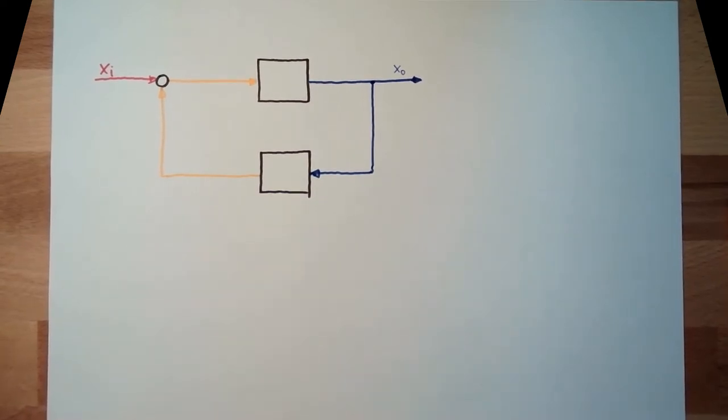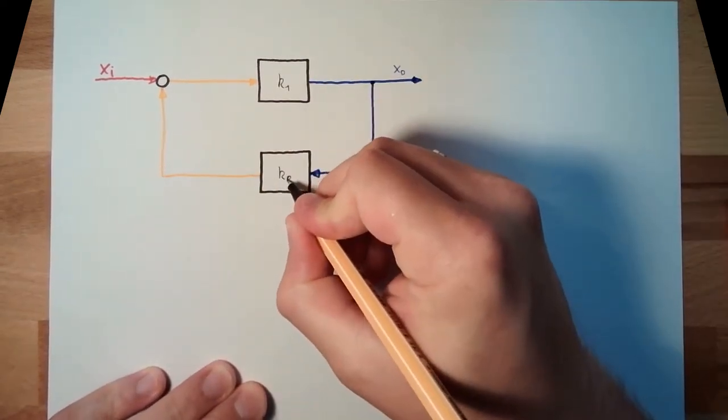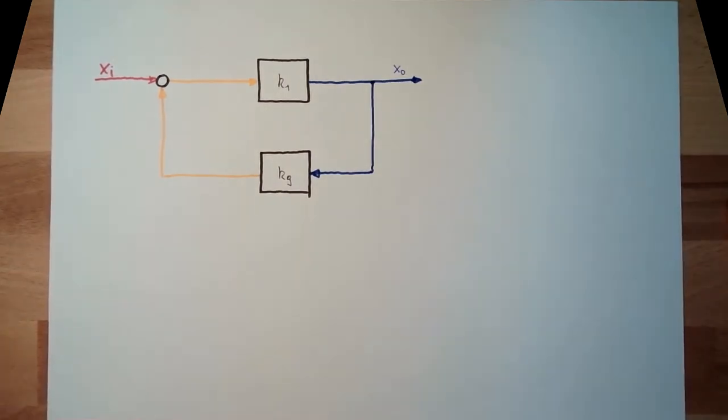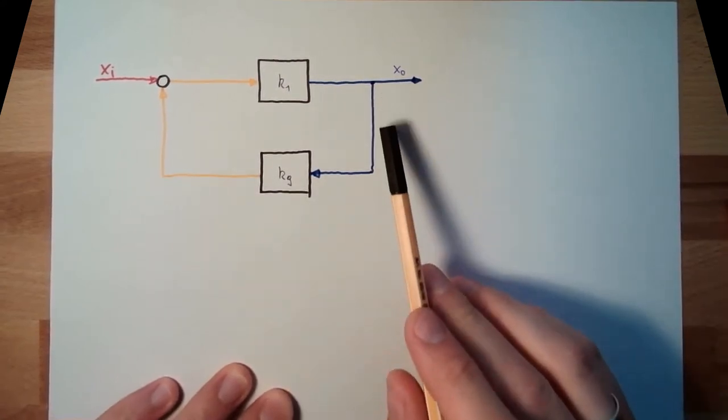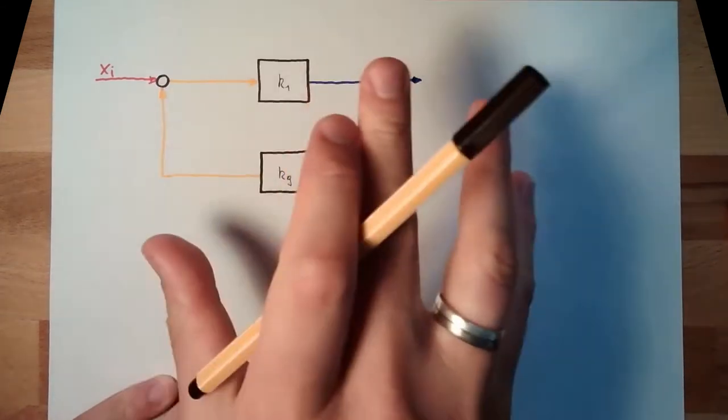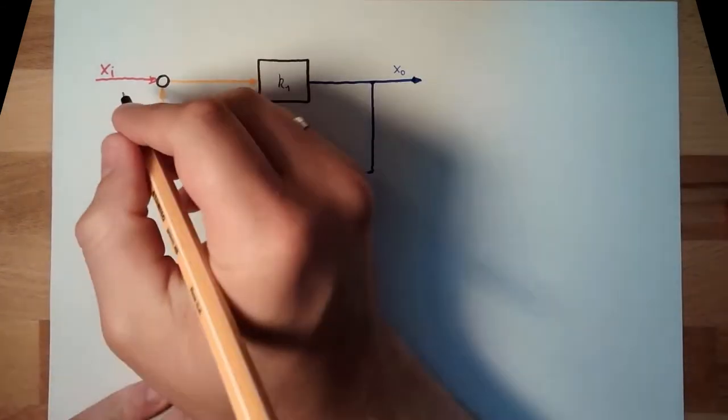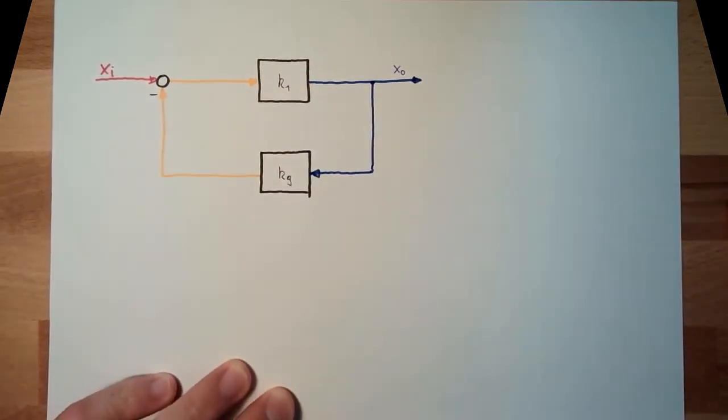And now here we have K1 in the forward part, and the reverse part, I call it KG. It is a feedback loop. There is positive feedback, like it was drawn now. This may lead to swinging systems. Usually we use reverse feedback. So, we say it's a minus here.